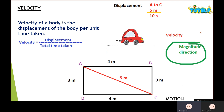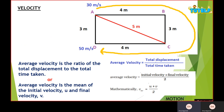Velocity of a body is the displacement of the body per unit time taken. Because it involves displacement, it has both magnitude and direction — this is a very important point. Its symbol is V and its unit is meter per second. For average velocity from A to D, the total displacement is 3 meters, and time taken is 15 seconds, so average velocity is 3 over 15 equals 0.2 meters per second.